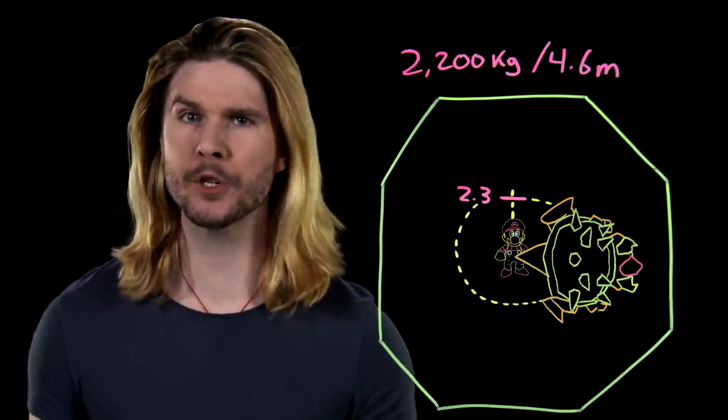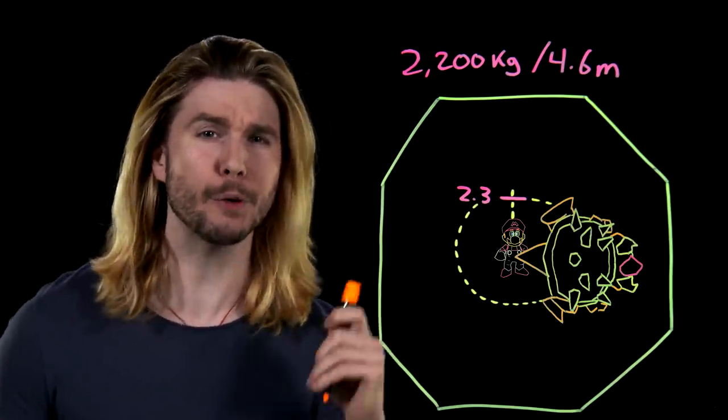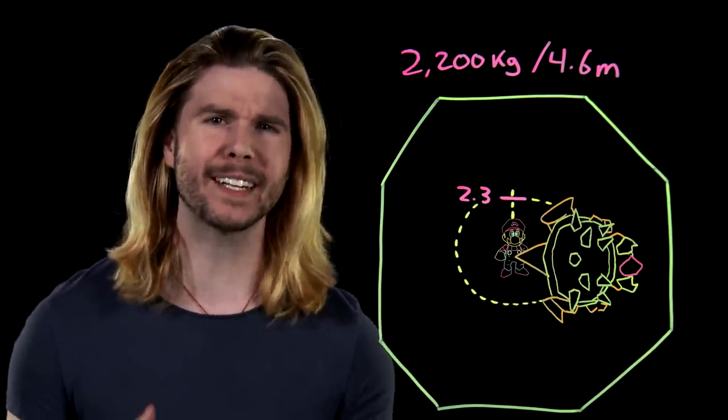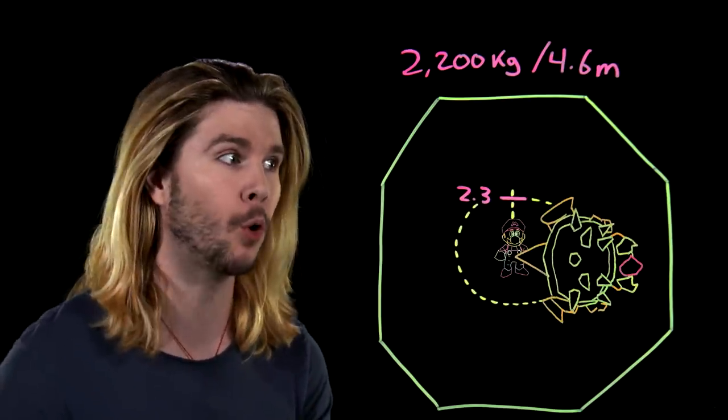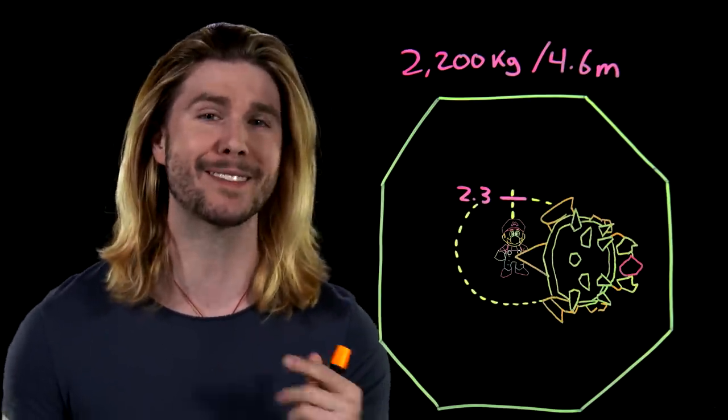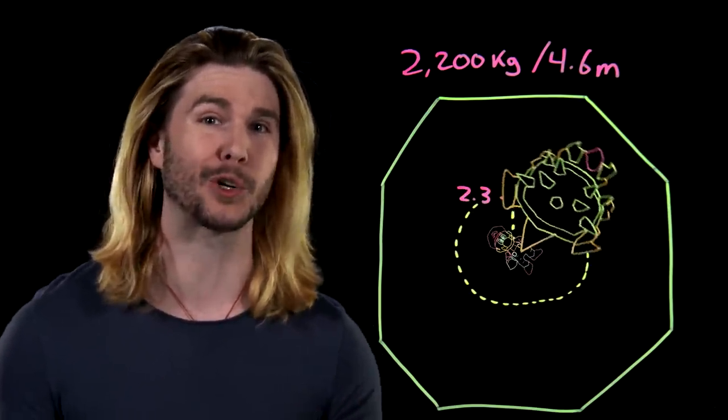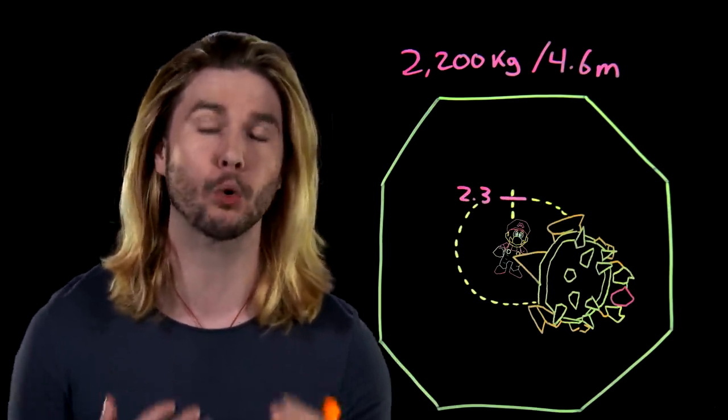Now, finally, on to the potentially arm-ripping forces. If you've ever spun anything around on the end of a string, you intuitively know that it takes more force to spin something around more quickly than it does to spin that same mass more slowly, and so the velocity of Bowser during this spin will be critically important.